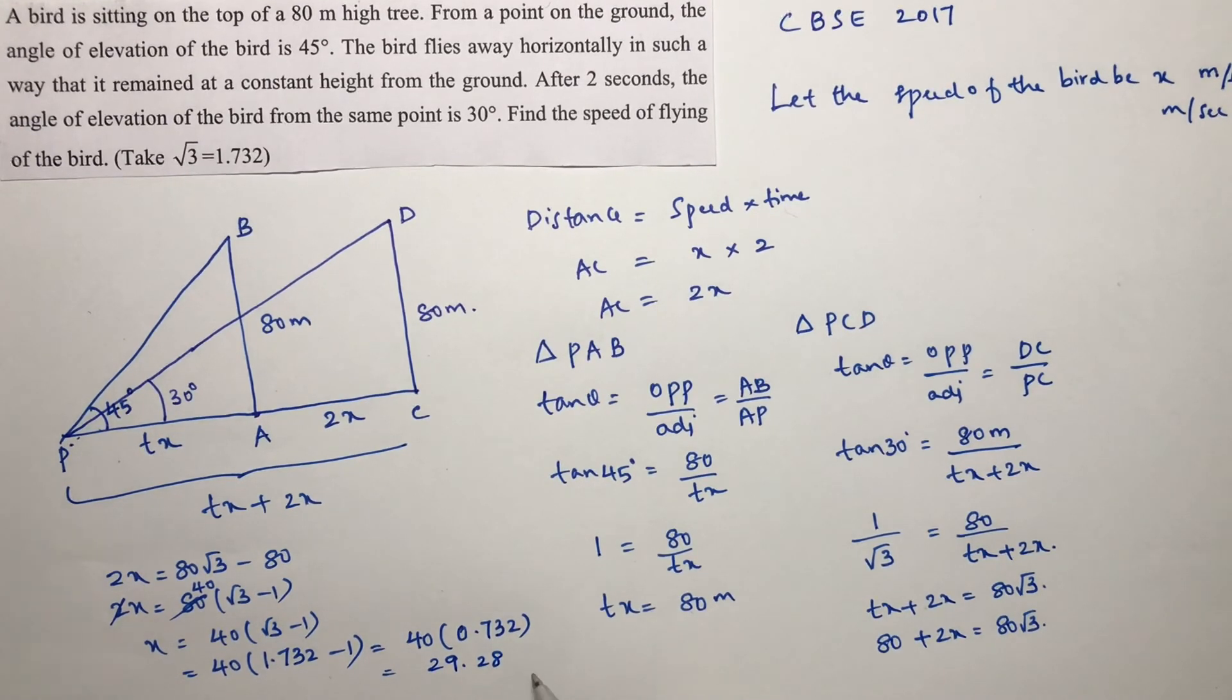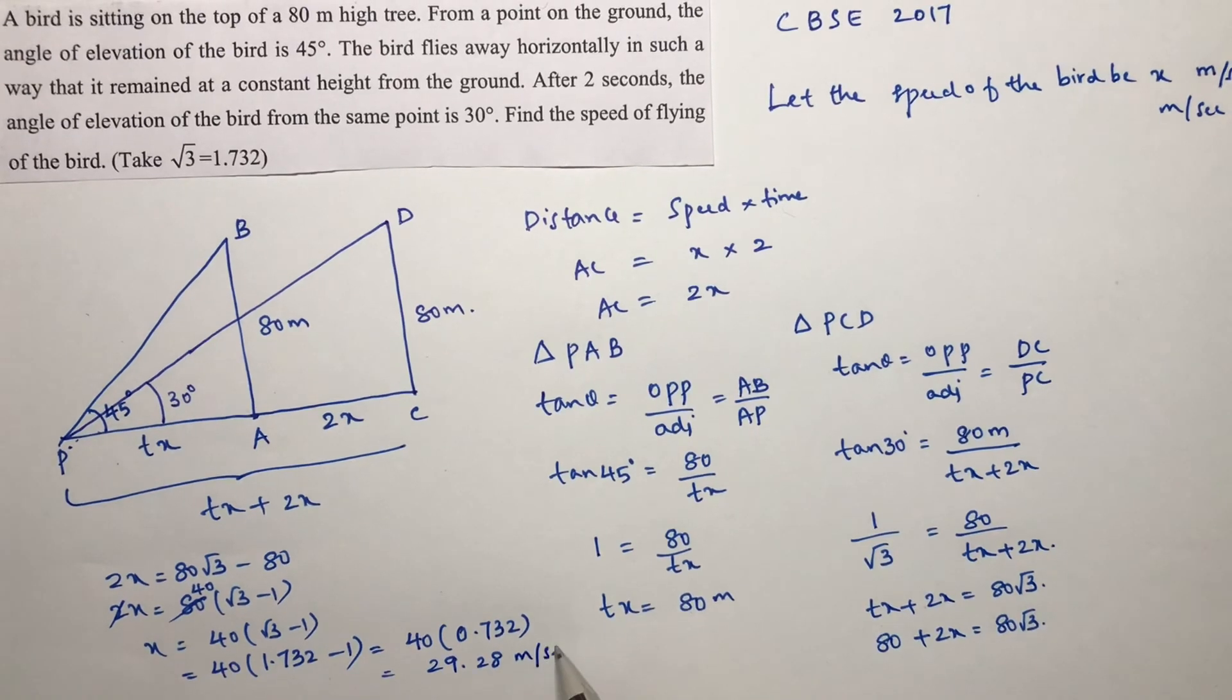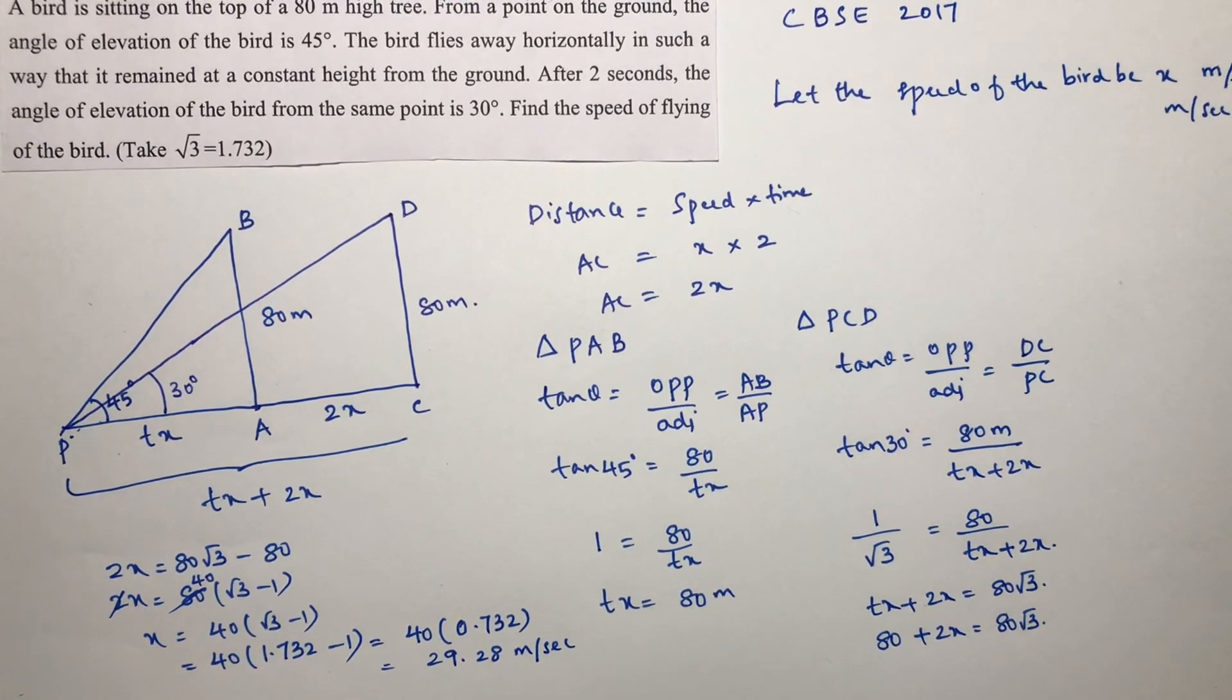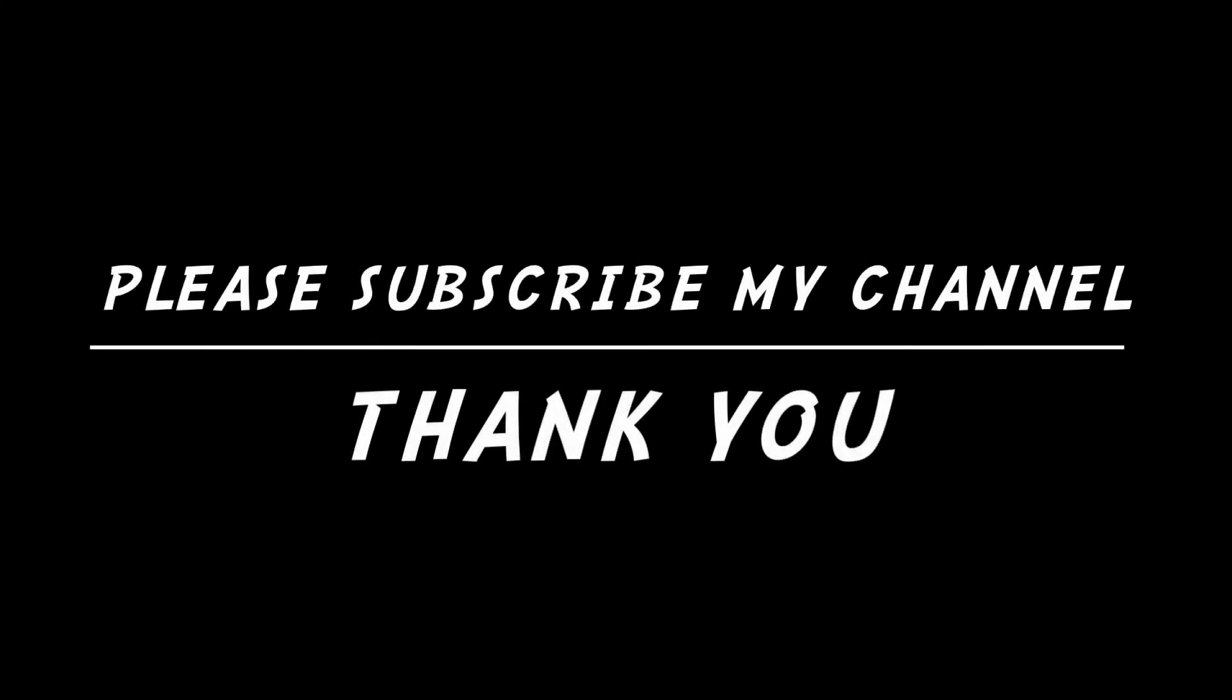40 times 0.732 is 29.28, so the speed is 29.28 meters per second. X is the speed, so speed is 29.28 meters per second.